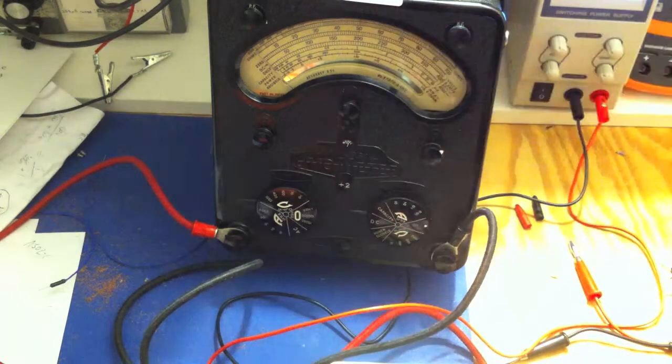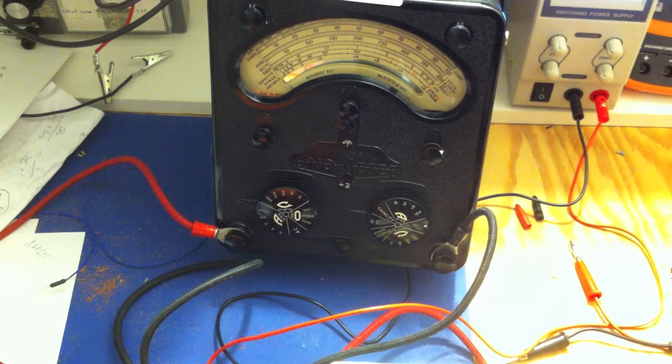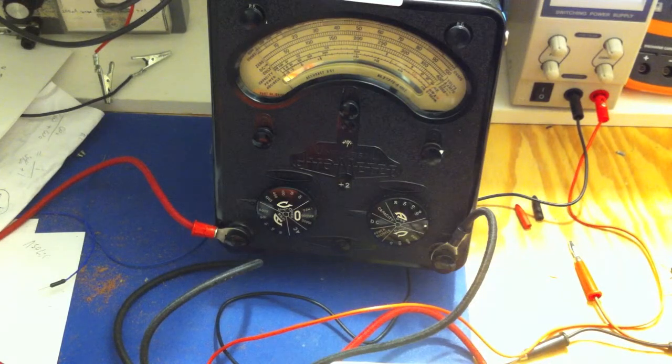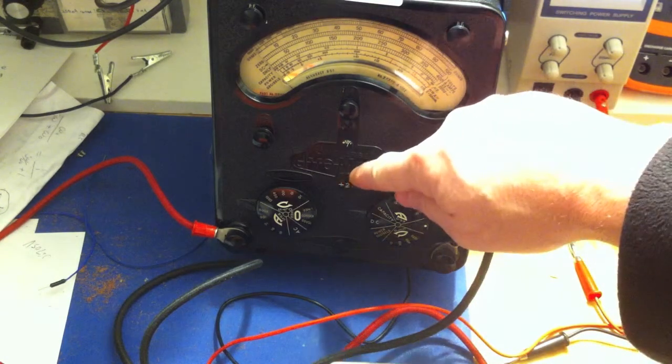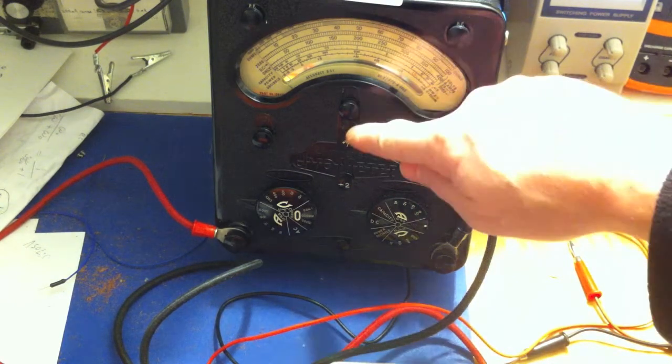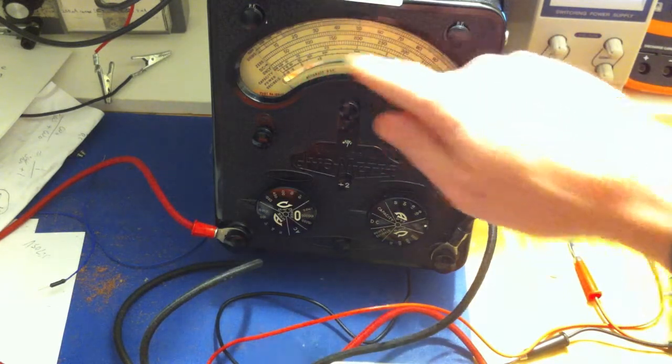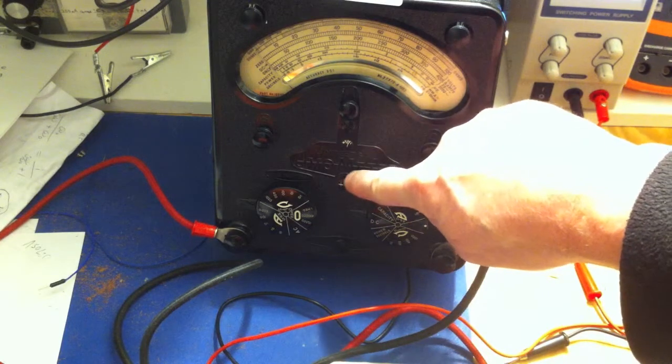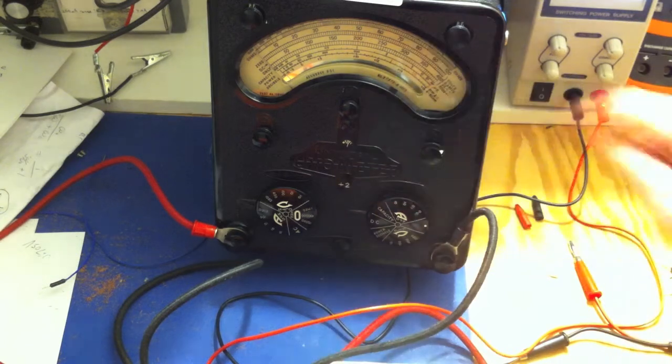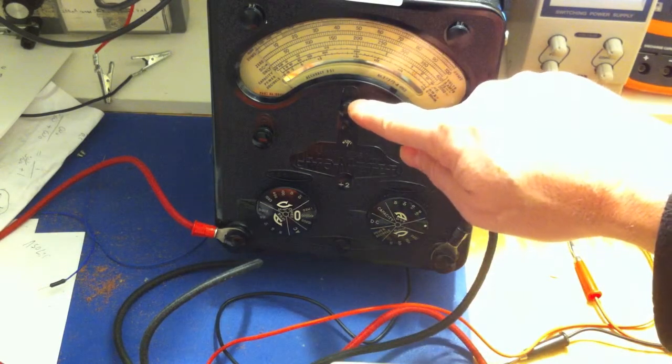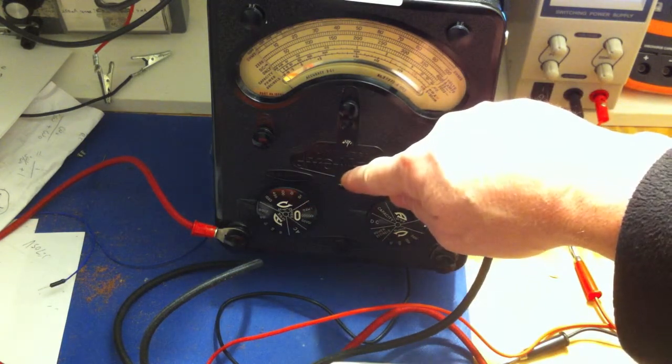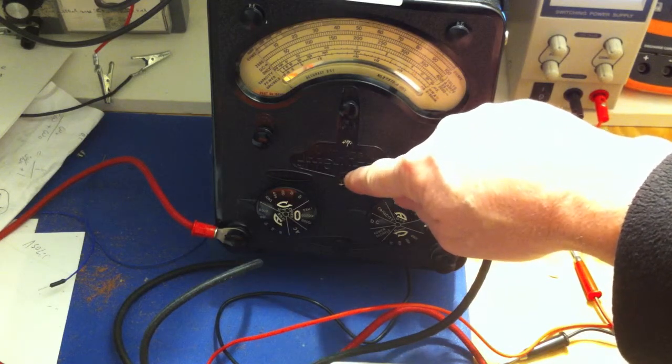The avometer goes to 20 microamps per division. There's 100 divisions here and each little division is 20 microamps. It's also got a divide by 2 so you can get a higher resolution to bring it down to 10 microamps. When I hit this button, I'm dividing the 20 microamps per division by 2.